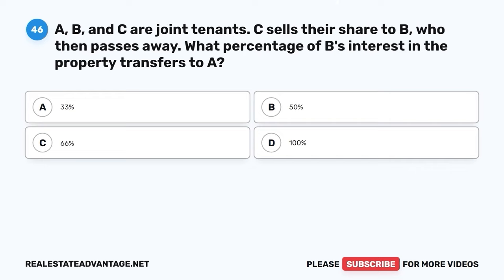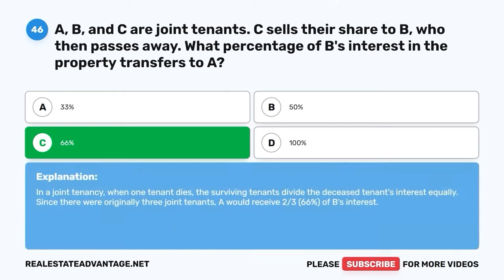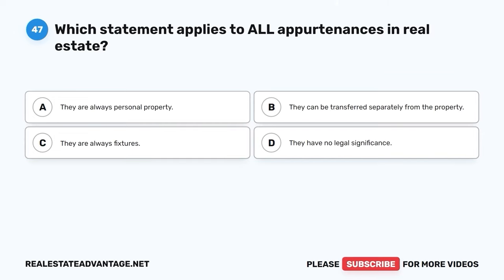Question 46. A, B, and C are joint tenants. C sells their share to B, who then passes away. What percentage of B's interest in the property transfers to A? A. 33%. B. 50%. C. 66%. D. 100%. The correct answer is C: 66%. In a joint tenancy, when one tenant dies, the surviving tenants divide the deceased tenant's interest equally. Since there were originally three joint tenants, A would receive two-thirds (66%) of B's interest.